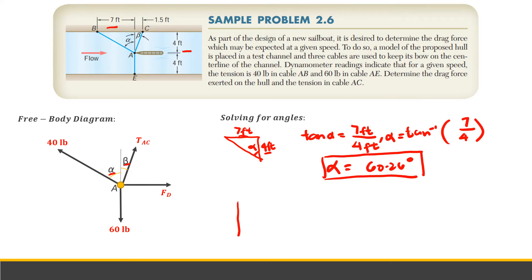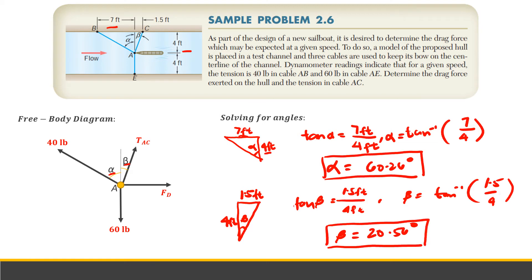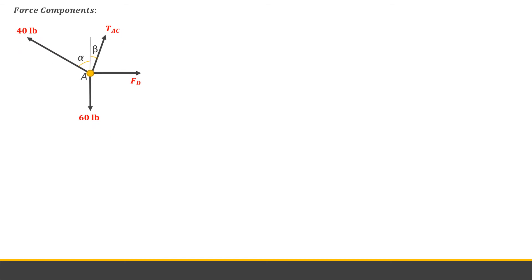For beta, this is 4 feet and this is 1.5 feet. Tangent beta equals opposite which is 1.5 feet over 4 feet. Beta is then equals to 20.56 degrees. Since we have more than 3 forces, which is 4, we will use the component method.